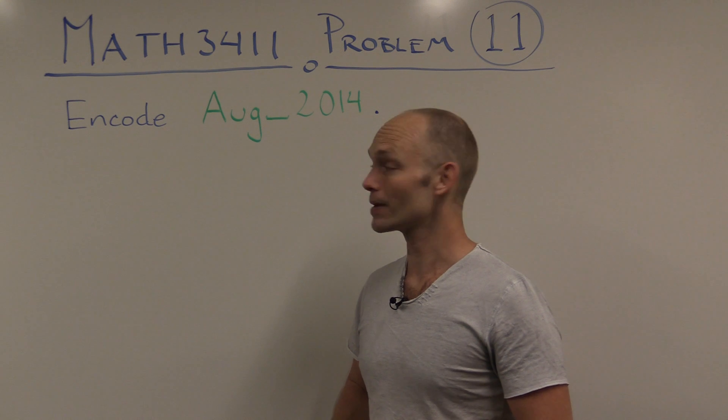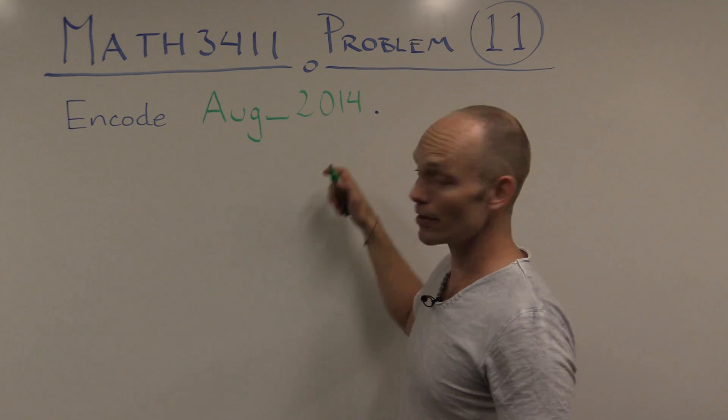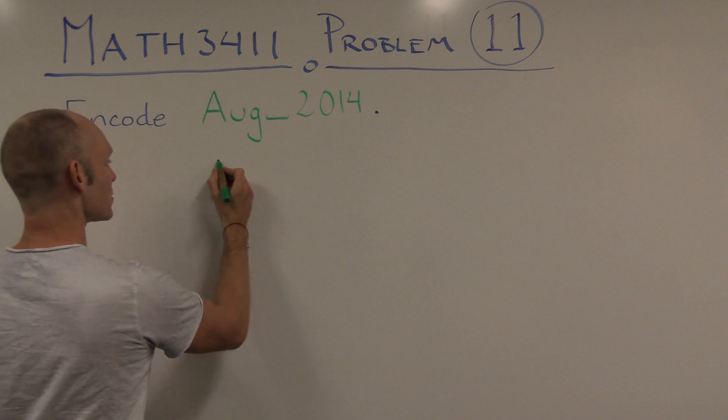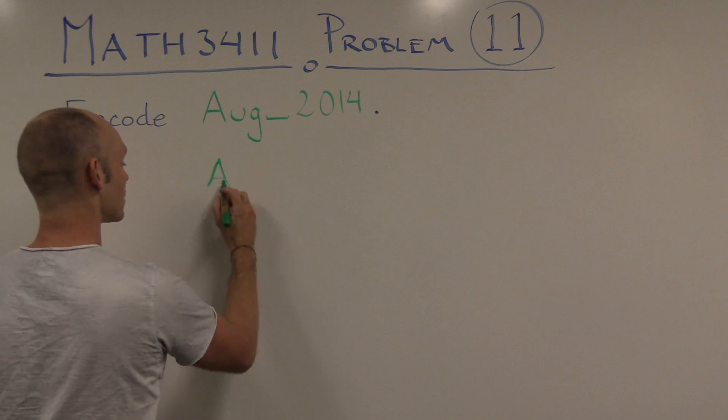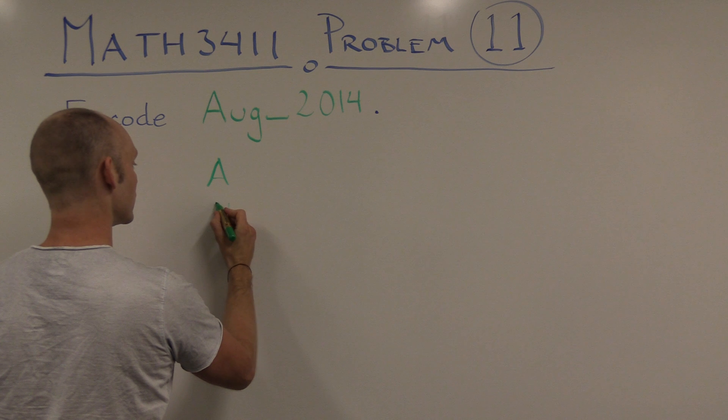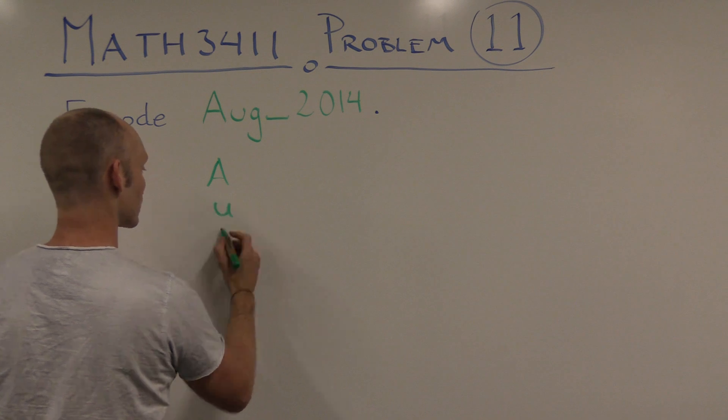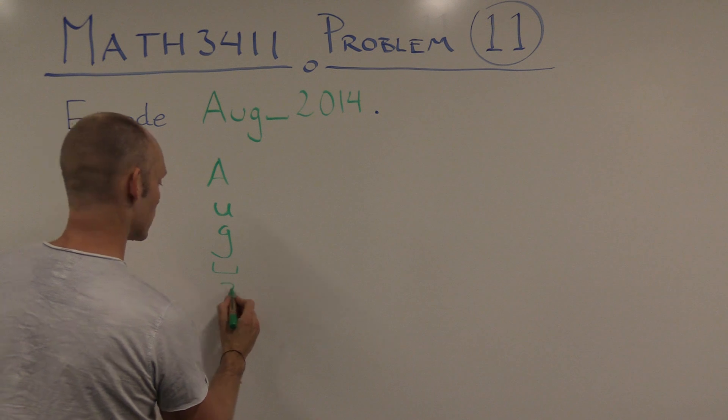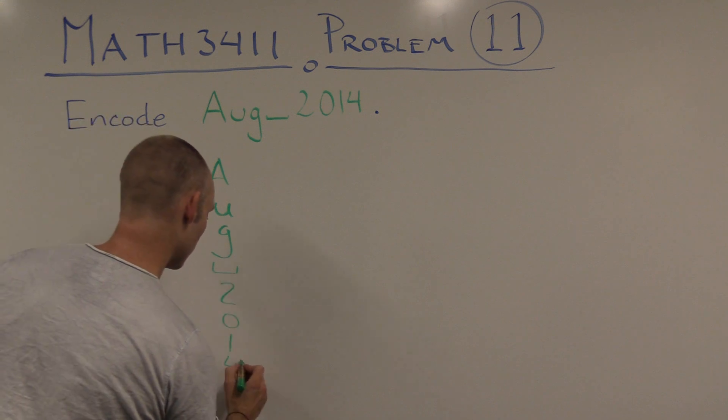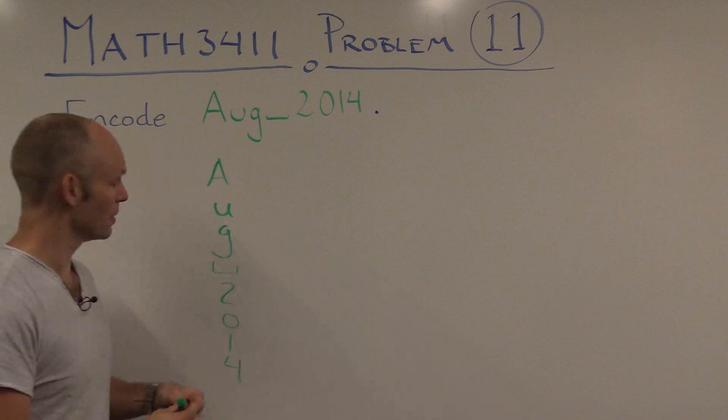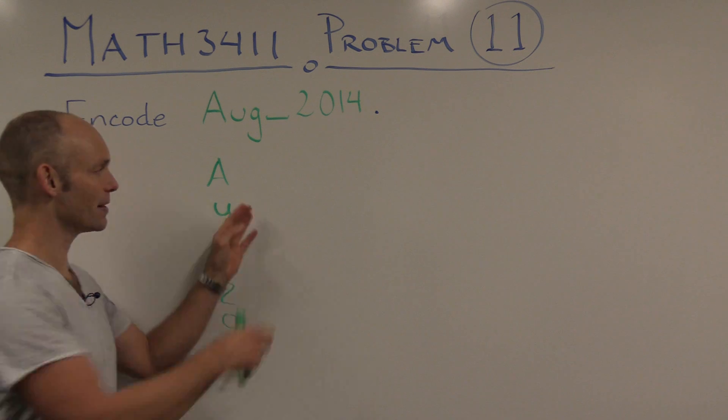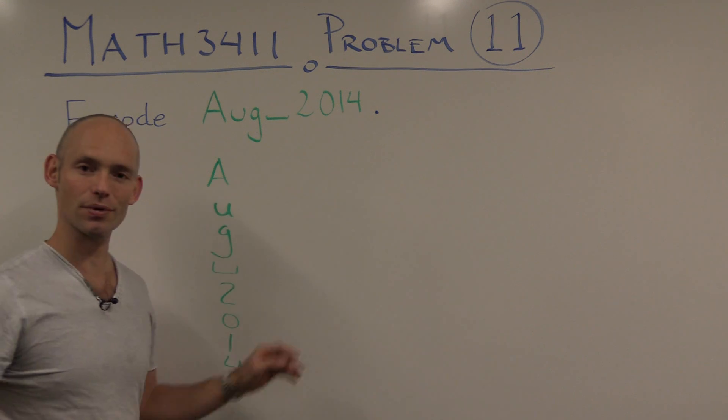So first of all, we can take these characters and write them vertically, one on top of each other. So AUG space 2014. Now, for each of those characters, I then have to look up the 7-bit ASCII code for them and write them as rows here.